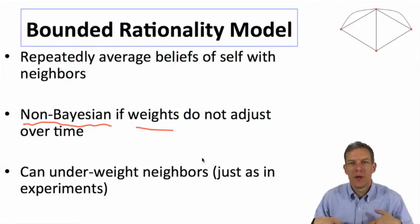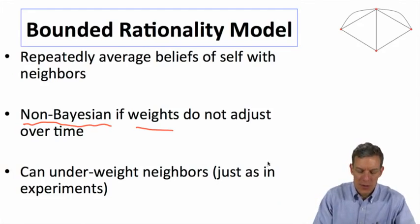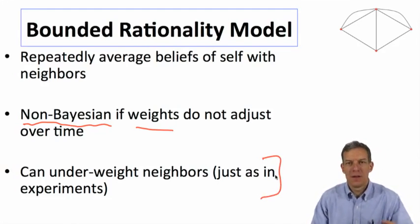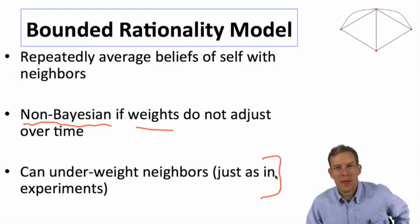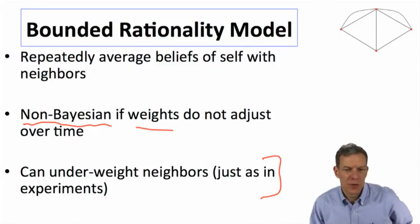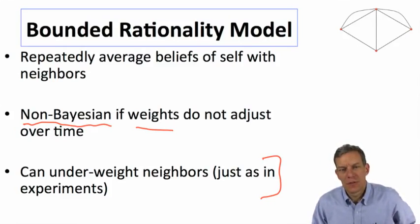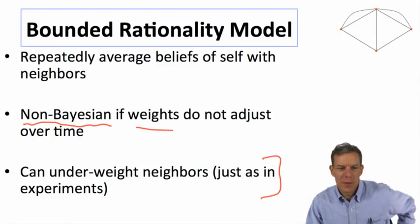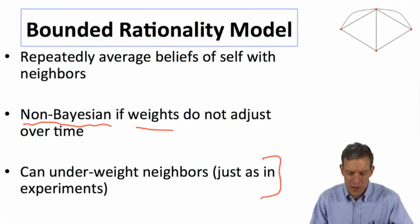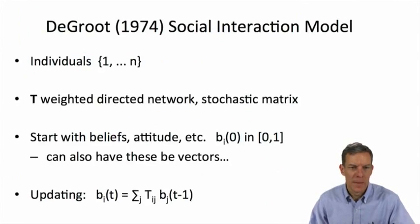And it can also be that maybe I put too much weight on my own belief. And there's some experimental evidence that individuals underweight neighbors. There's some experiments by Choi, Gale, and Kariv, which define these kinds of things. There's a number of experiments that have some evidence that people will underweight neighbors. And so this kind of model will capture that in some cases.